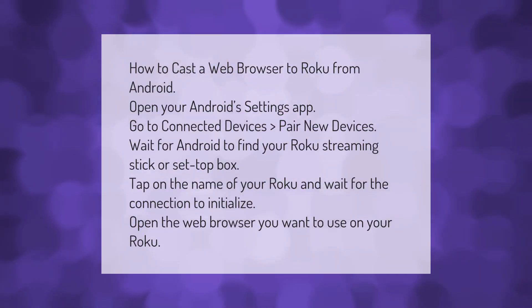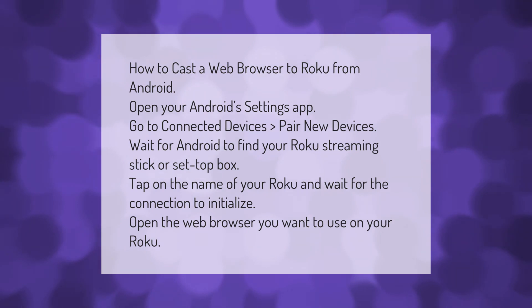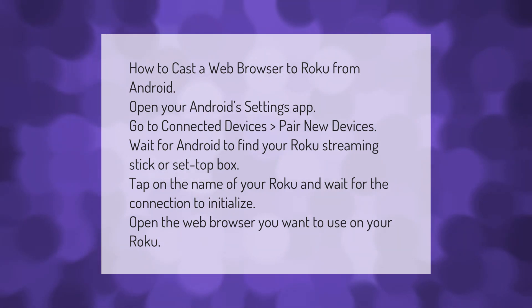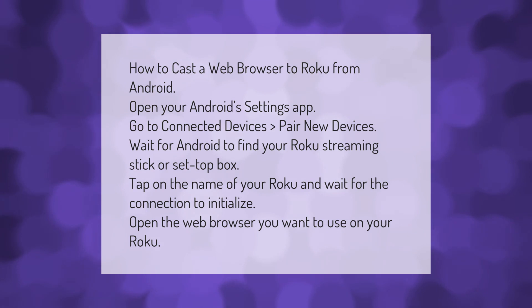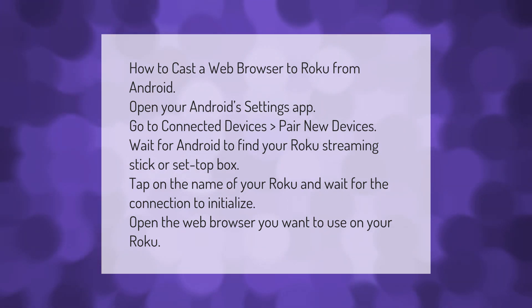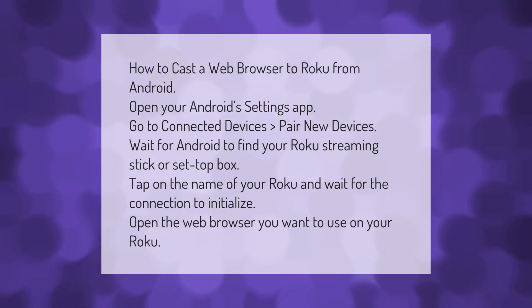To cast a web browser to Roku from Android, open your Android Settings app and go to Connected Devices. Select Pair New Devices and wait for Android to find your Roku streaming stick or set-top box. Tap on the name of your Roku and wait for the connection to initialize, then open the web browser you want to use on your Roku.